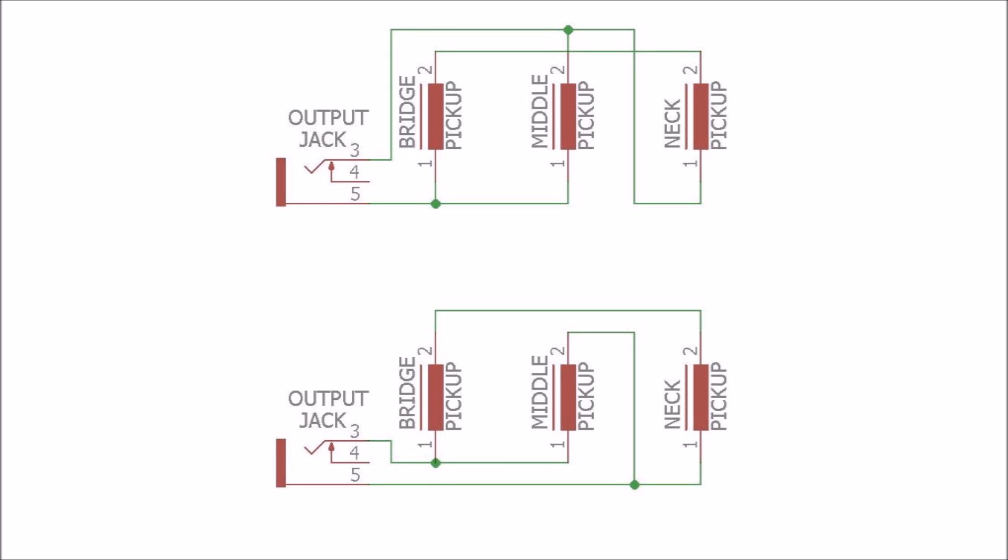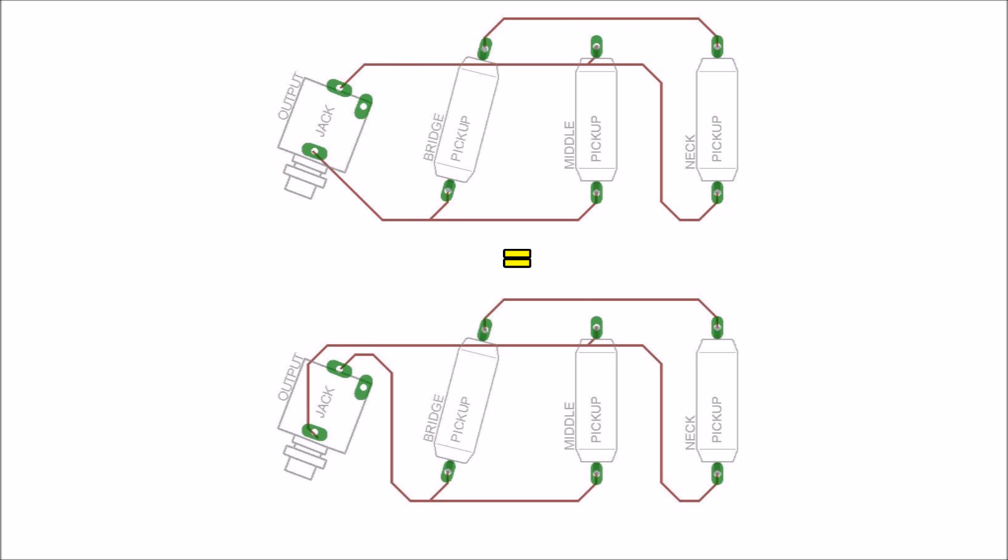Here is another example, this time of different compound connections that will produce tones that are the reverse phase of each other, but are actually identical tones. Again, when we redraw the diagrams, the reason why the tones are identical becomes obvious for the same reasons.